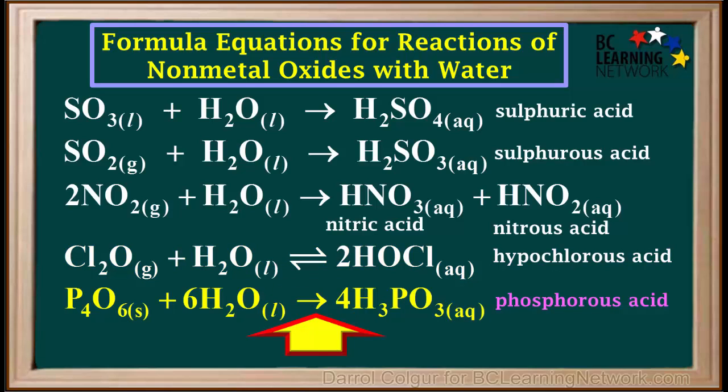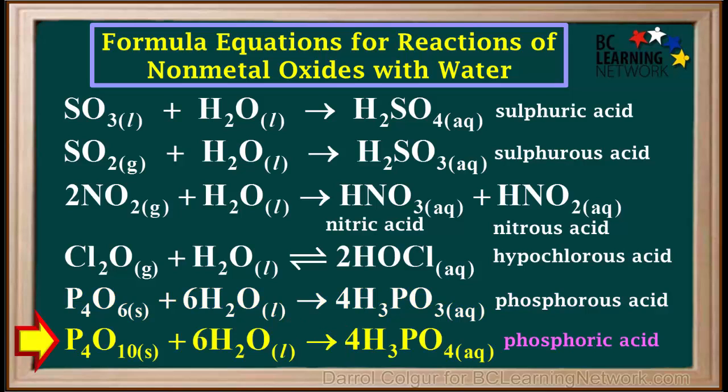One of the common oxides of phosphorus, P4O6, reacts with water to produce the weak acid H3PO3, phosphorous acid. Another oxide of phosphorus, P4O10, reacts with water to produce the weak acid H3PO4, phosphoric acid.